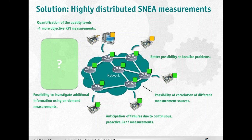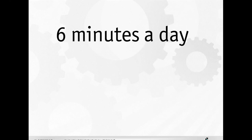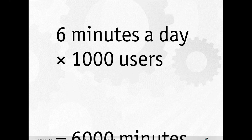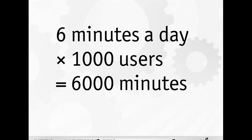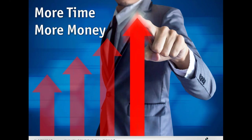You can have anticipation of failures due to continuous proactive 24/7 measurements. The measurements are running the whole time, and as soon as one threshold is exceeded, you can proactively react and solve the issue before any customer can complain. You will have an overall higher customer satisfaction and everything is under control. If you save six minutes a day for 1,000 customers, that leads to 6,000 minutes — 100 hours a day — meaning more time and more money.